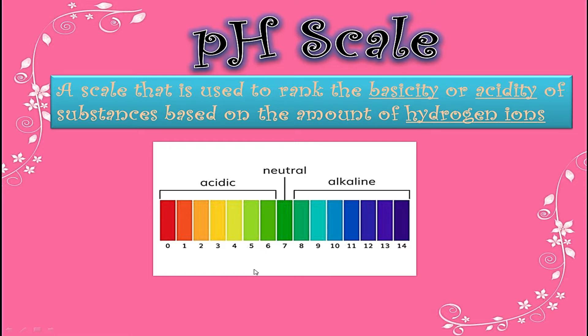If any substance has a pH from 8 to 14, that substance is considered alkaline or basic. If any substance has pH 7, that substance is neutral. For example, pH of water is 7, and pH of salts are also 7.